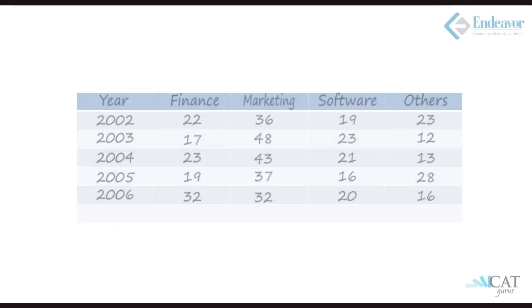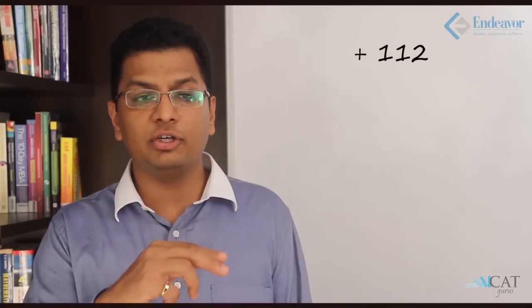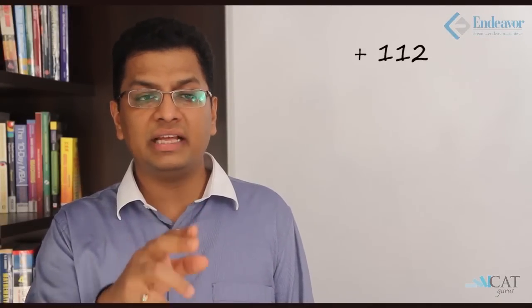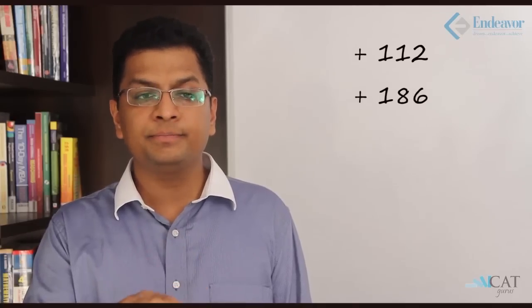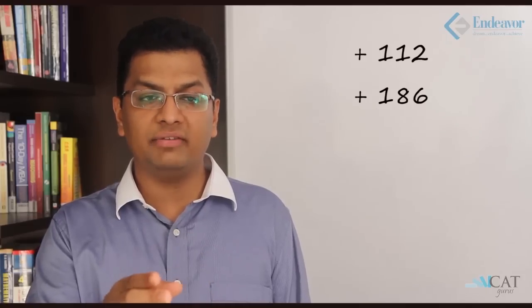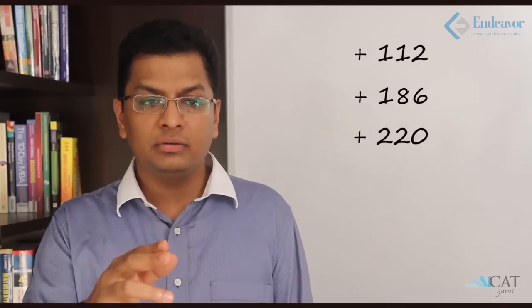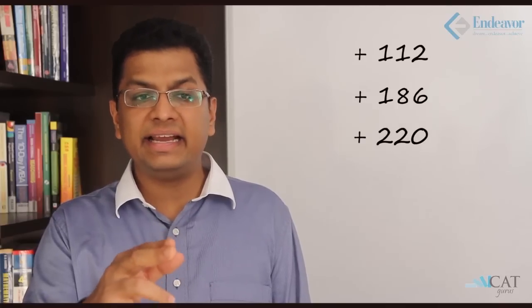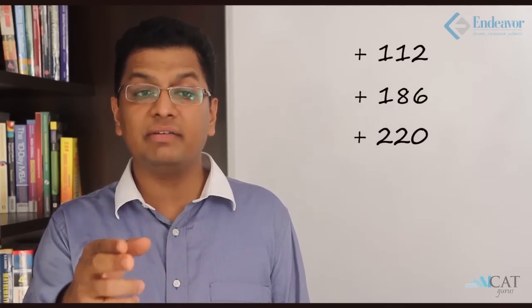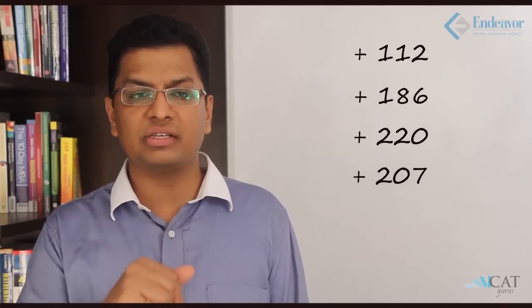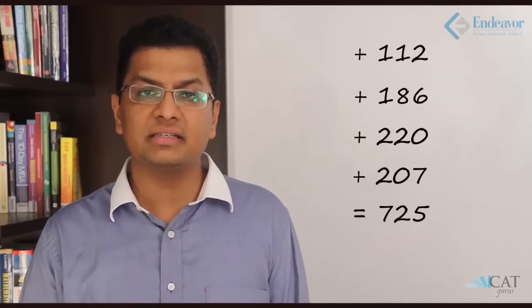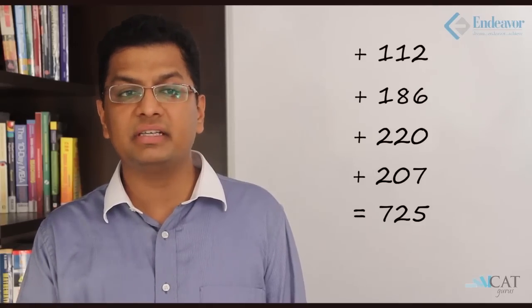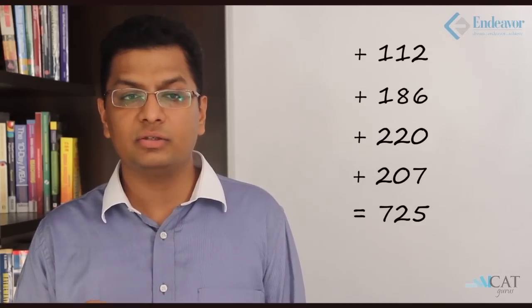Computing each year: 14% × 800 = 112; 31% × 600 = 186; 20% × 1100 = 220; 18% × 1150 = 207; and the last year is zero. The total comes to 725. So the difference between students getting finance jobs versus marketing jobs across all five years is 725.